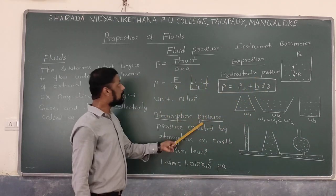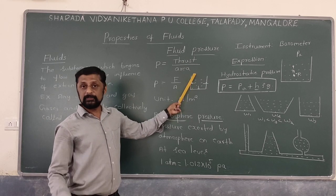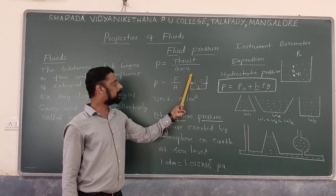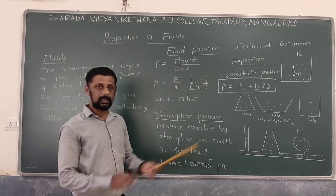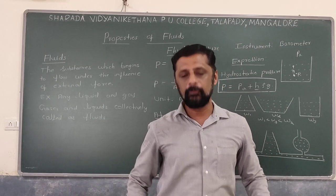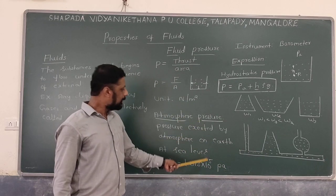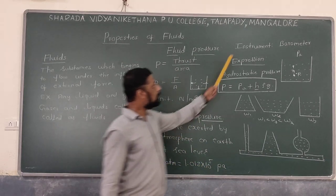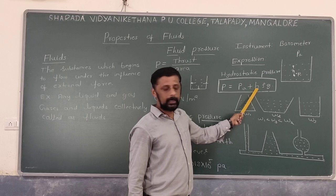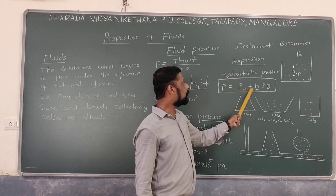To summarize: pressure means thrust acting per unit area — force acting per unit area. This force always acts normal to the surface in contact with it. The SI unit is Newton per meter squared. The standard atmospheric pressure is 1.013 × 10⁵ Pascal, measured by a barometer. The expression for pressure at any point inside a liquid at rest is P = PA + HρG.